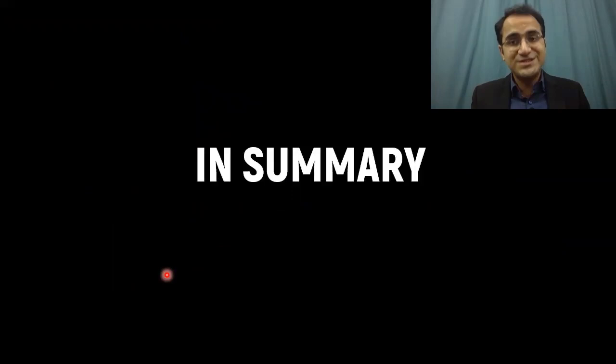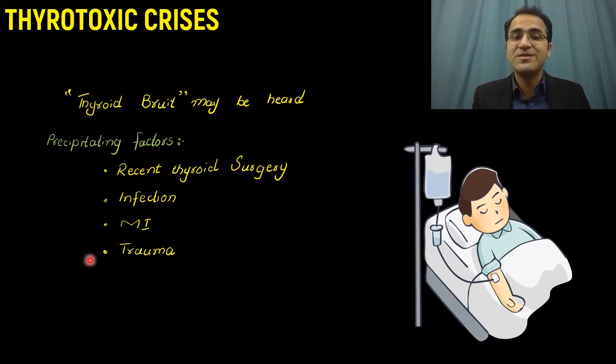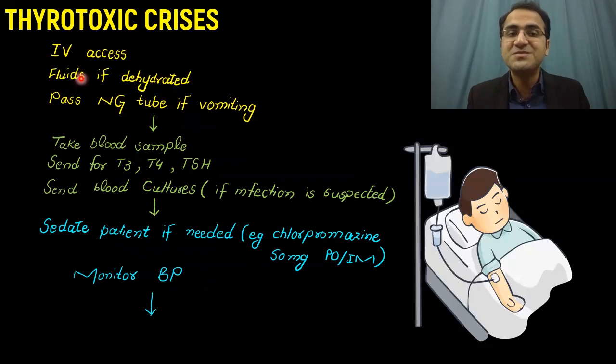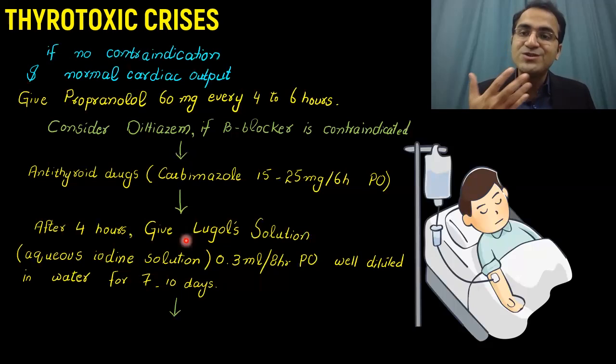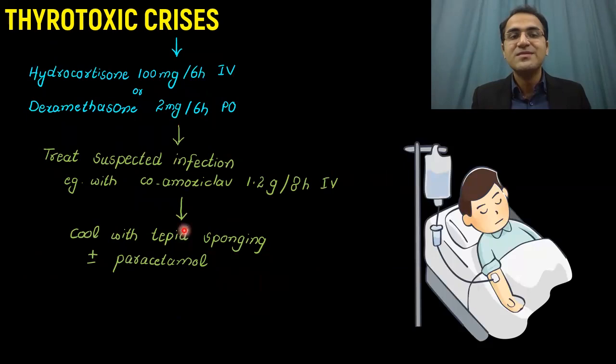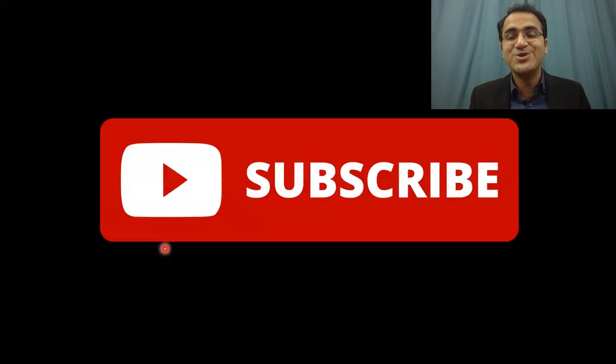In summary, we talked about what is thyrotoxic crisis, its presentation, and precipitating factors. Then we discussed treatment: establish IV access, take thyroid hormone samples, give sedation with chlorpromazine if needed, give beta blockers to block peripheral actions, give antithyroid drugs to decrease thyroid hormone production, give Lugol's iodine solution to prevent iodine uptake via the Wolff-Chaikoff effect, give steroids, treat infection, and do cold sponging to prevent hyperthermia. If you liked this video, please subscribe and check out my other videos on emergency management.